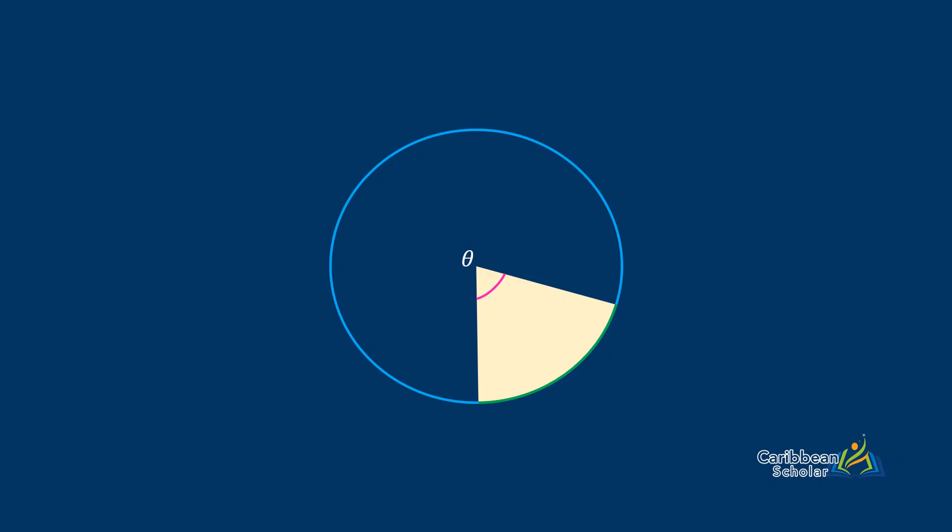The last thing we want to talk about regarding circles is how to find the area and circumference of just a part of the circle. The circumference of a part of the circle is called an arc, and the area within that arc is called a sector.